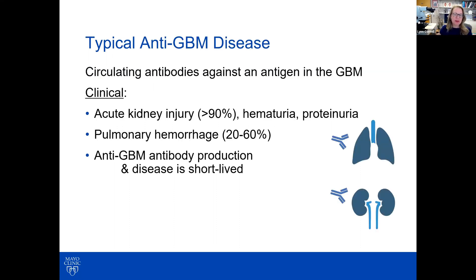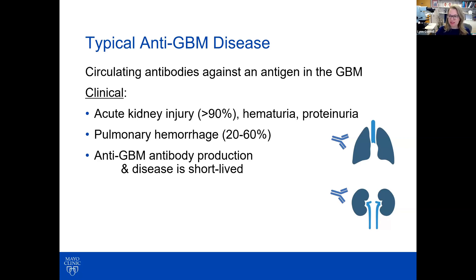With typical anti-GBM disease, we see circulating antibodies against an antigen in the glomerular basement membrane, and this is what causes the disease. Clinically, patients present with acute kidney injury, hematuria, and proteinuria. A number of patients can have pulmonary hemorrhage — the percentage varies with the series. The anti-GBM antibody production and the disease is very short-lived, so it's a really aggressive disease, but it's short-lived.